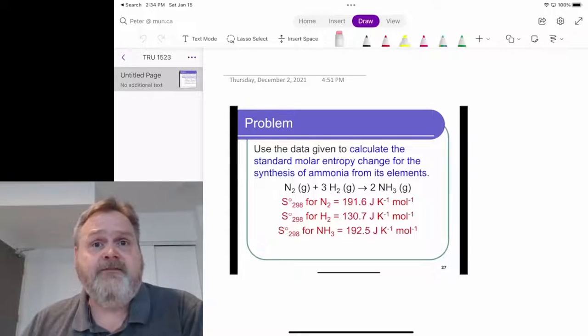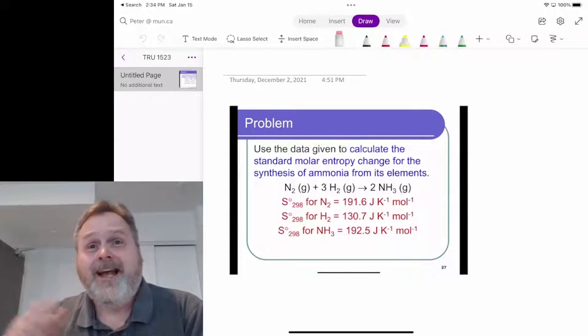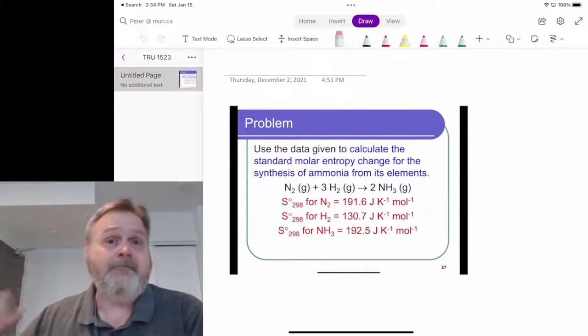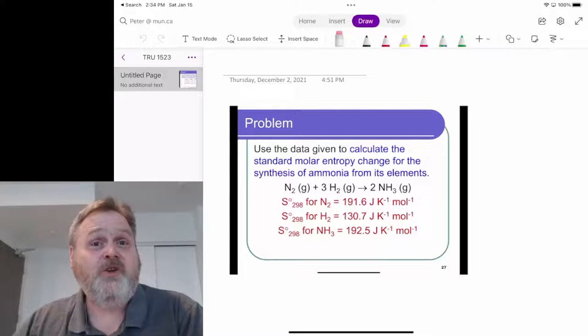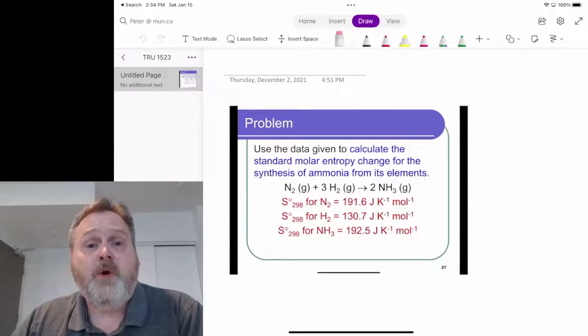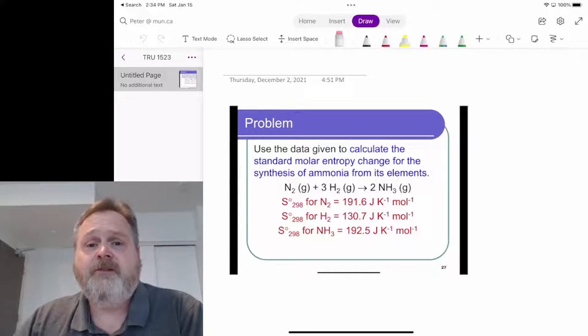This uses a variant of Hess's law, like we saw for enthalpies, and we'll see later on for Gibbs energy as well. The idea of Hess's law - that we can take any series of steps that lead from the same initial state to the same final state and get the correct answer - is going to be applied quite a bit and is quite useful. In this particular case, we're looking at the formation of ammonia: nitrogen plus three hydrogen gives us two ammonia. That's the balanced equation we're referring to.